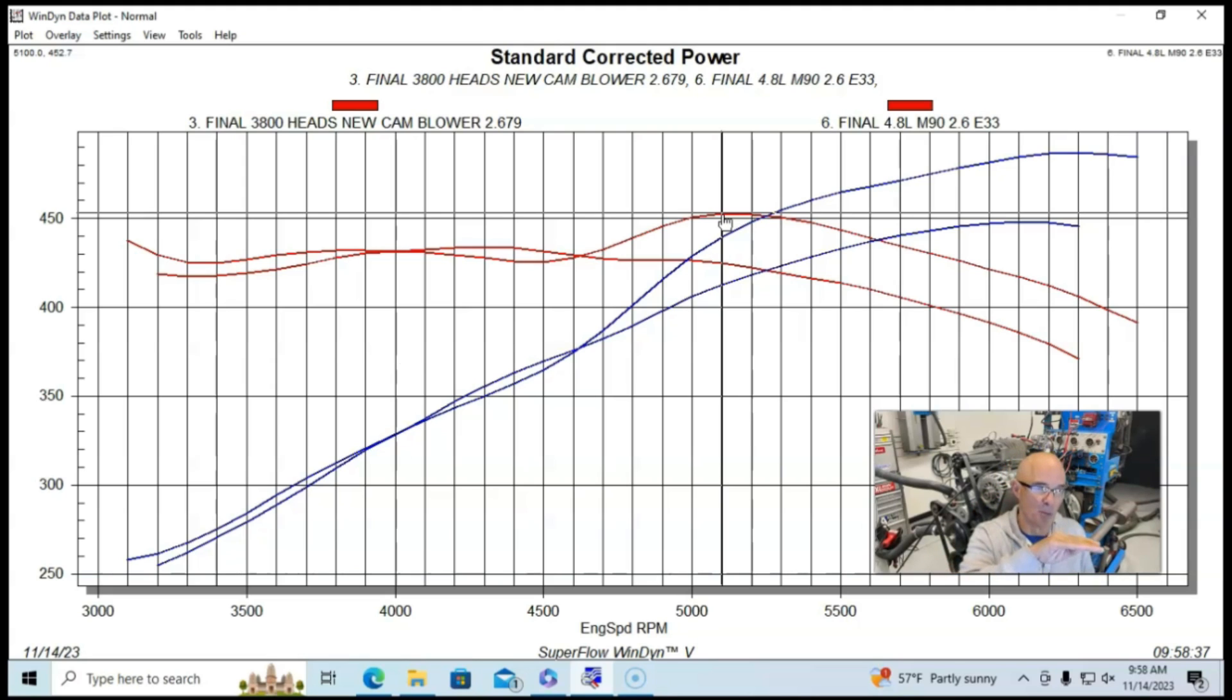The interesting thing is if you look at below 4500 RPM, in fact below 4600 RPM, the two were really comparable in terms of torque output. We were just kind of moving back and forth a few foot-pounds of torque.